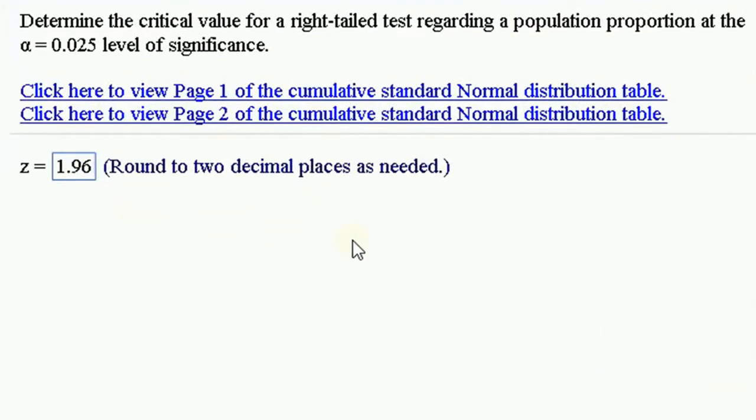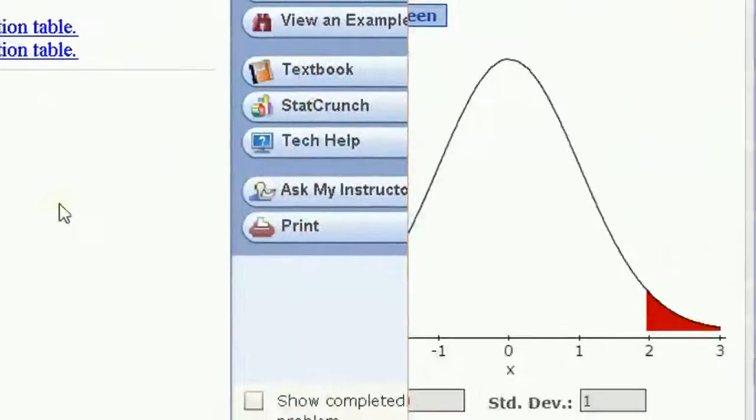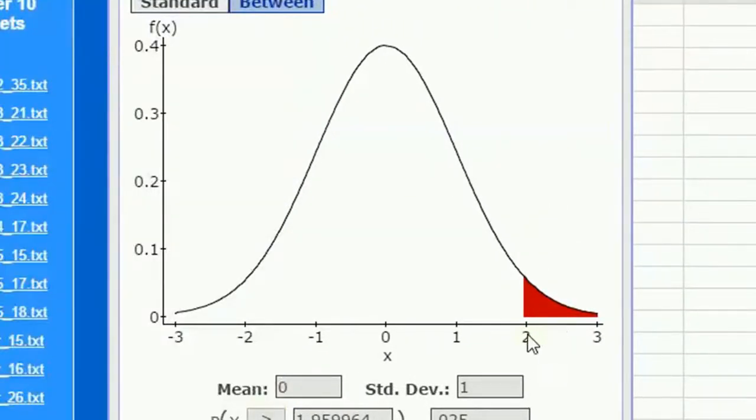So in this case, if we were to do a hypothesis test, calculate a test statistic—which would be a z-statistic in this case—if it was greater than 1.96, if it was anywhere in this red region, we would have sufficient evidence to reject the null hypothesis.